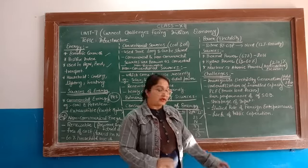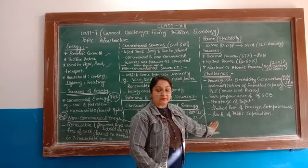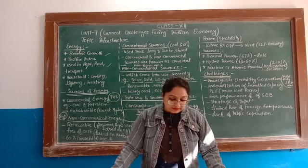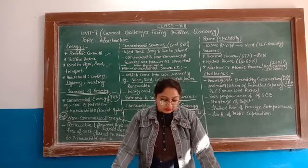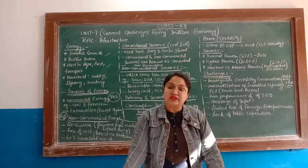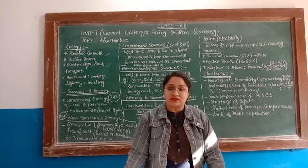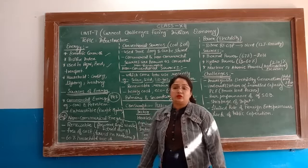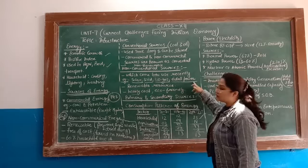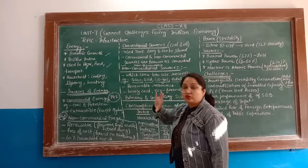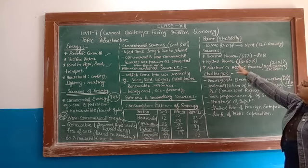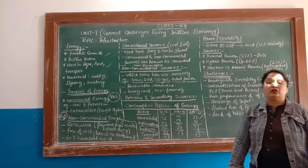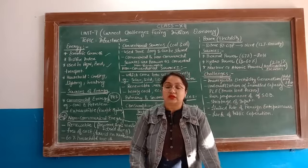Measures to meet the energy crisis: If we improve these challenges, our power and electricity problems can be reduced. Key measures include improvement in PLF, controlling distribution losses, raising productive capacity through the private sector rather than only the public sector, and using more renewable sources — utilizing more hydro potential and non-conventional sources. Since thermal power accounts for 67%, more technological advancements in hydropower can help increase our capacity and reduce challenges.